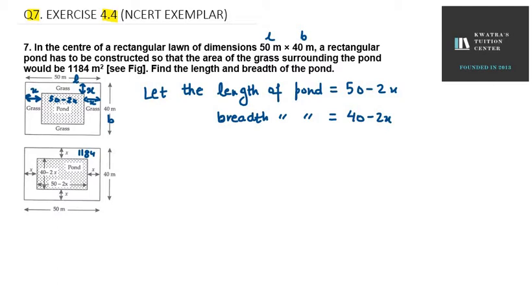So this means that it is equivalent to area of lawn. Lawn बड़ा वाला, उसमें से अगर minus कर दे pond, तो we will get 1184. Area of big lawn minus area of pond.